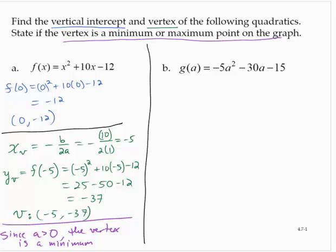Exercise B asks us the same thing. For g of a is negative 5a squared minus 30a minus 15. So first, finding the vertical intercept, g of 0 would be negative 5 by 0 squared minus 30 by 0 minus 15, which would be negative 15. So the vertical intercept is 0, negative 15.